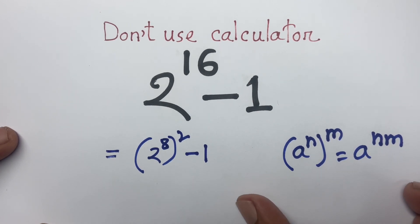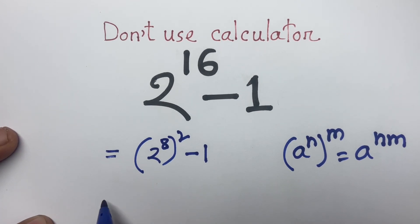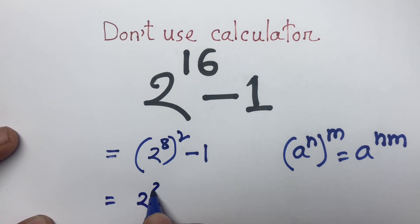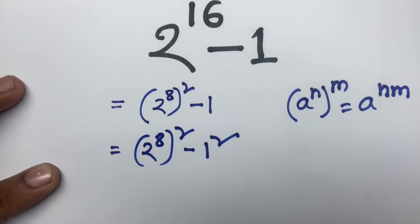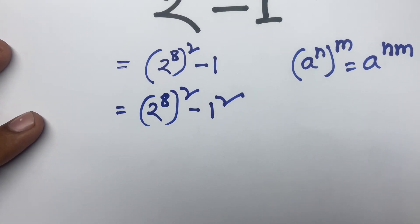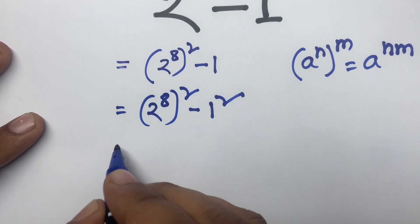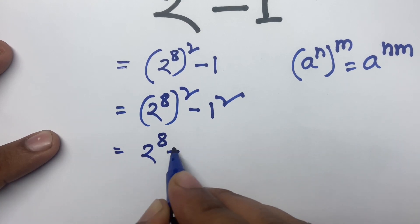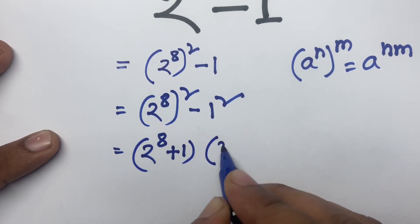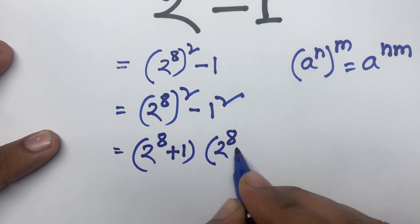Now I can say 2 to the power 8 squared minus 1 squared. We know that a squared minus b squared equals a plus b times a minus b. I follow this formula. So in this line I can say: 2 to the power 8 plus 1, times 2 to the power 8 minus 1.